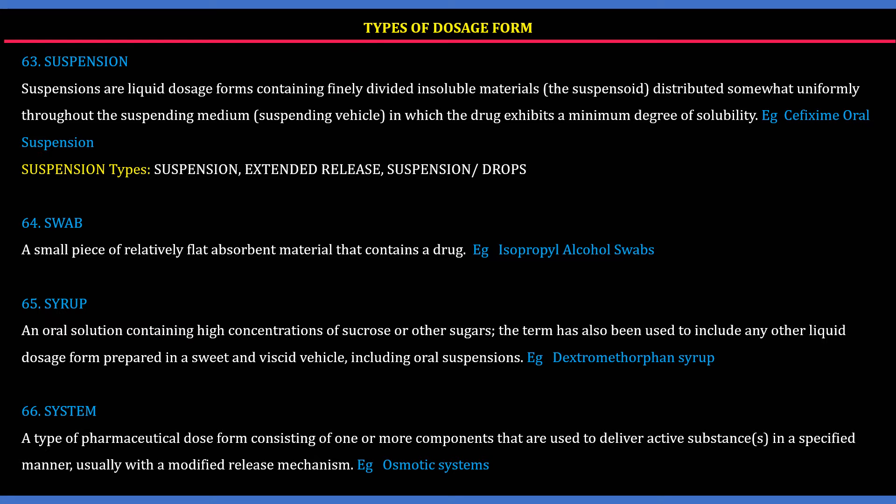65. Syrup: An oral solution containing a high concentration of sucrose or other sugars containing the drug or medicament. Example: dextromethorphan syrup. 66. System: A type of pharmaceutical dose form containing one or more components that usually deliver the active substances in a specified manner, usually a modified-release mechanism. Example: osmotic systems.